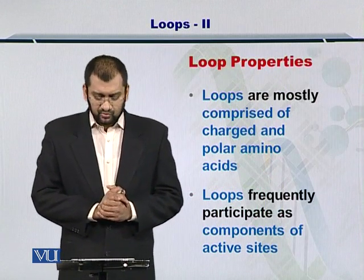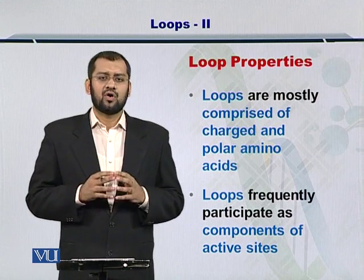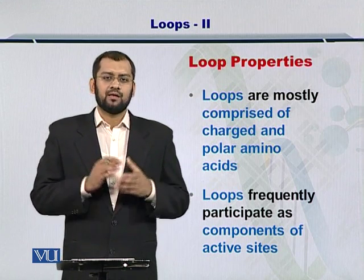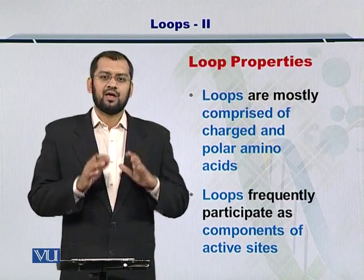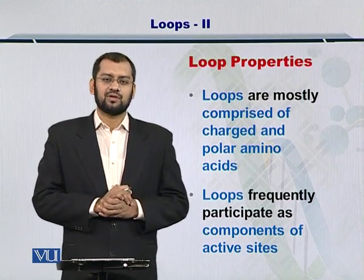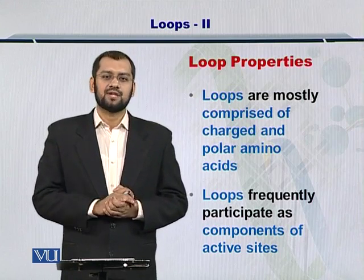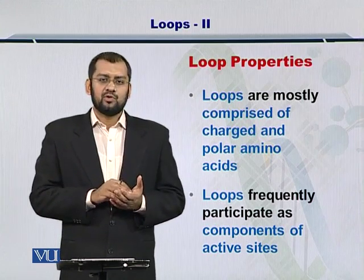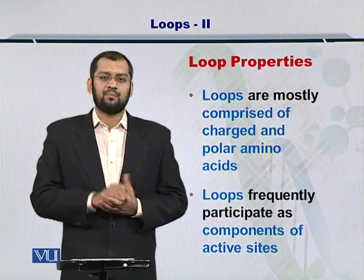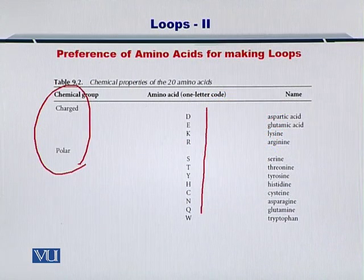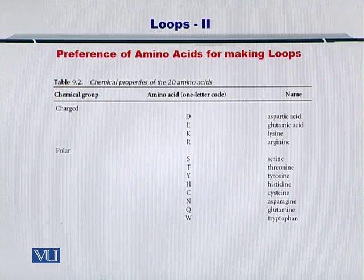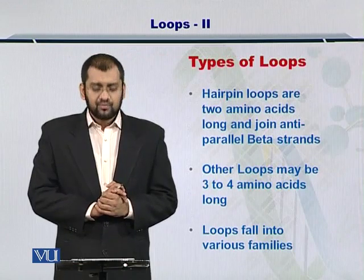Some properties of these loops: these loops are essentially comprising charged amino acids or polar amino acids. The reason for this is that these loops tend to constitute active sites in proteins, and therefore they need those amino acids which are able to interact with other proteins. Polar amino acids and charged amino acids do exactly that. Here is a list of amino acids that are charged or polar, which are typically found in loops within protein structures.